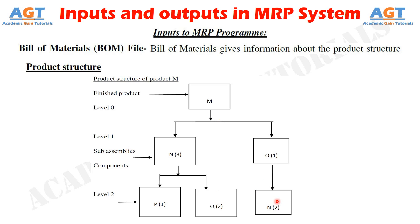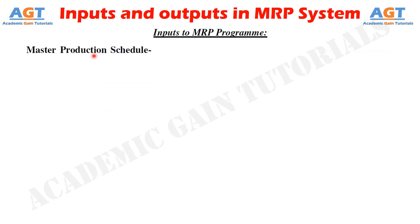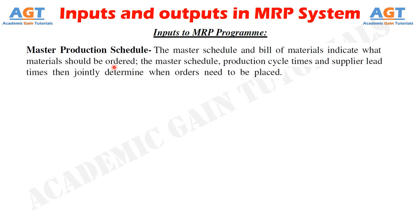The third input to the MRP program is the Master Production Schedule. The master schedule and Bill of Materials indicate what materials should be ordered. Production cycle times and supplier lead times jointly determine when orders need to be placed. The master production schedule includes quantities of products to be produced at a given time period, both at aggregate and detailed levels — aggregate may refer to monthly production, and detailed may refer to weekly or daily production. The MPS takes the form of a table where rows represent products and columns represent time periods.